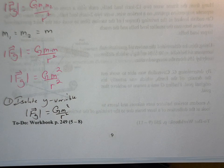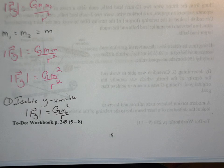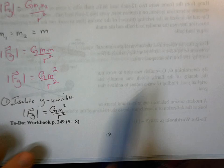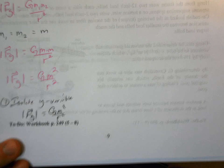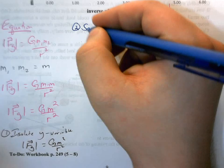So step two is to separate the X variable from everything else. So in this case, the X variable is one over r squared. So I'm going to take this one over r squared, kind of divorce it from everything else. So we're going to separate X variable.